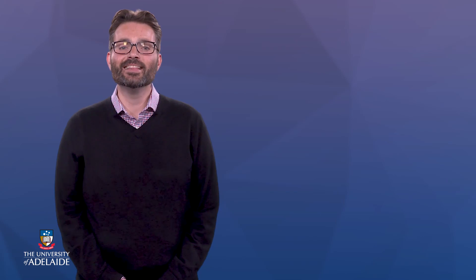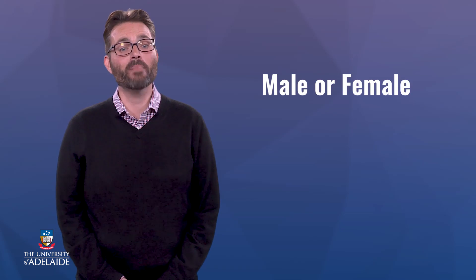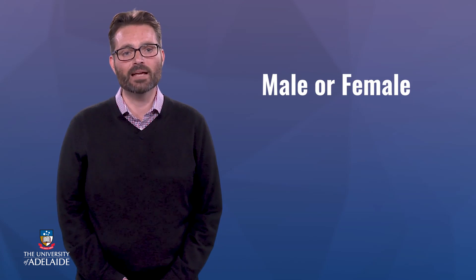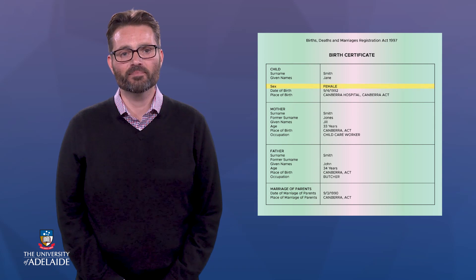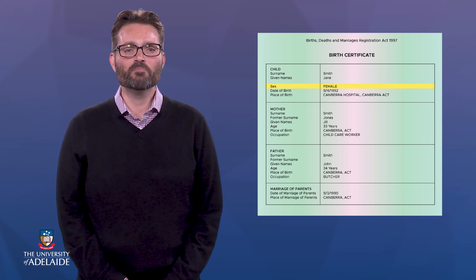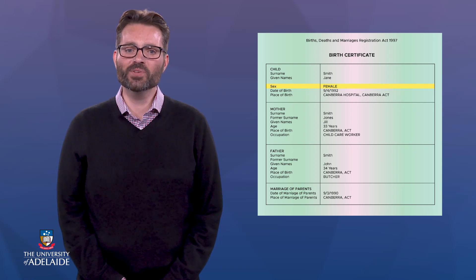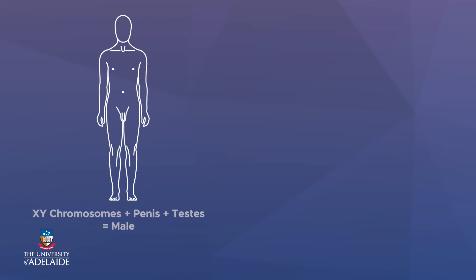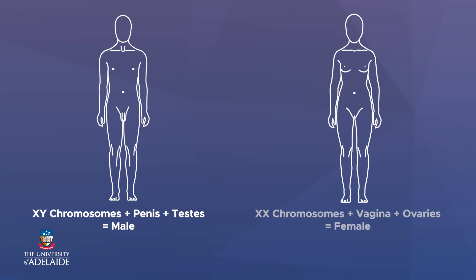Now let's take a look at another example of how the word sex is used in context: "Please tell me your date of birth, age and sex." In this example, the word sex refers to the male or female label that each of us is assigned at birth. Scientists refer to this as biological sex, and it's based on what genitals and chromosomes a newborn has at birth. If you have a penis and XY chromosomes, you're a male. If you have a vagina and XX chromosomes, you're a female.